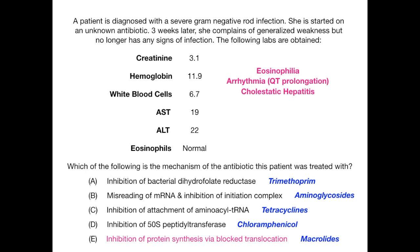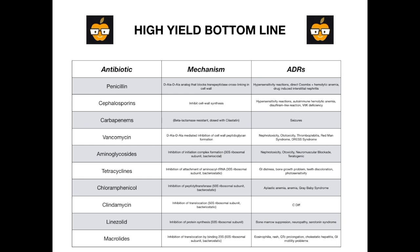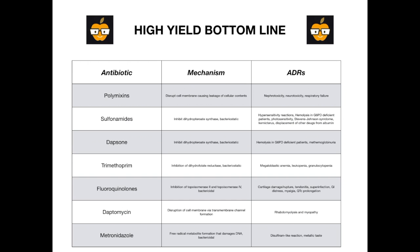The point of this exercise is to go through each answer choice, pair the antibiotic to its mechanism, and ask: what adverse drug reactions would I expect to see if the test writer wanted me to pick this answer? The high-yield bottom line: know your antibiotic mechanisms and their adverse drug reactions. There are two summary slides — pause the video to review them.